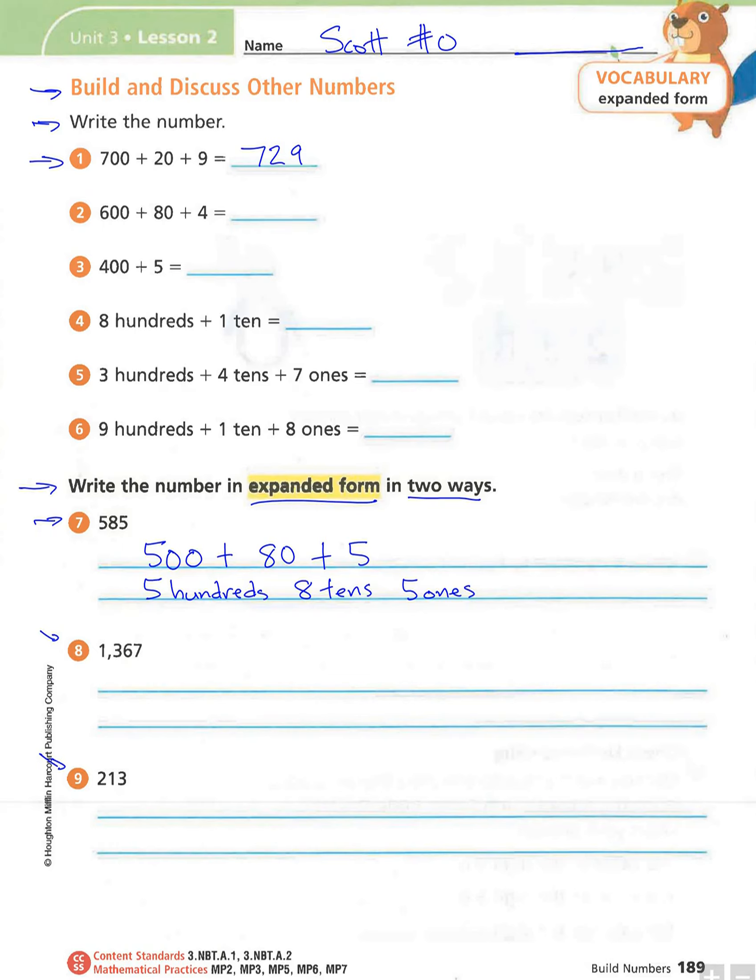So as always, please, as you're correcting, don't erase anything. Leave it there and use your green correcting pen if you have one. You could also use a green colored pencil. But again, don't erase anything, just add any changes that you need to make.